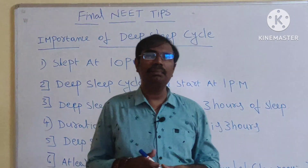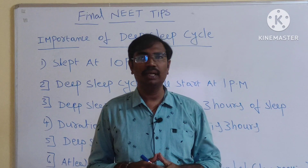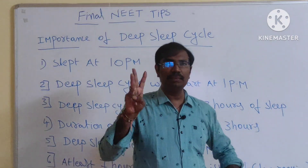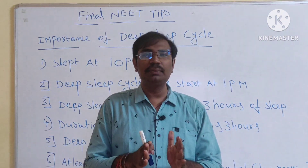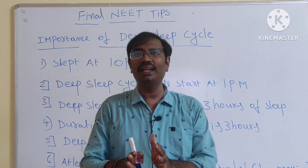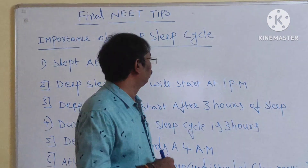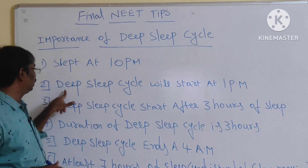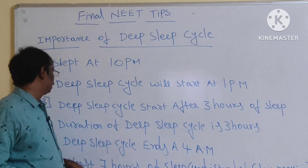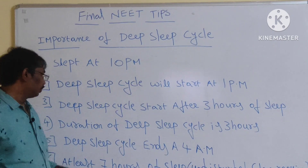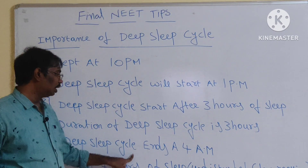For example, if you sleep at 10 pm, the deep sleep cycle will start around 1 am at midnight. The deep sleep cycle starts after 3 hours of sleep, so if you sleep at 10 pm, the deep sleep cycle starts at 1 am and ends at 4 am. The duration of the deep sleep cycle is around 3 hours.